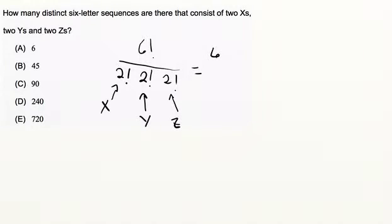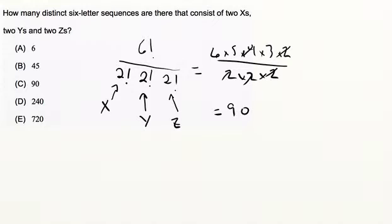So that's literally just going to be six times five times four times three times two divided by two times two times two. Cancel that. Cancel that. Six times five times three is 90, and that's your answer, C.